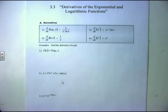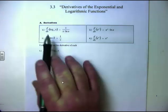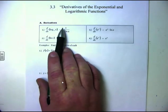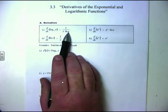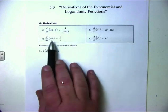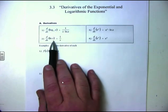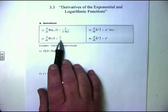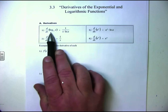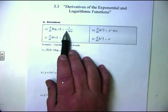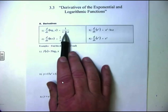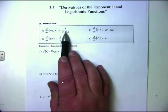The derivative of log base a of x is going to be equal to 1 over x times the natural log of a in the denominator. The main rule for logarithms is the derivative of the natural log of x. The derivative of the natural log of x is 1 over x. Therefore, the derivative of any other log — log base a of x — is 1 over x times the natural log of the original base a.